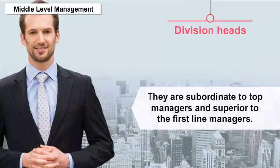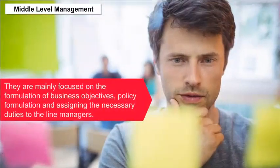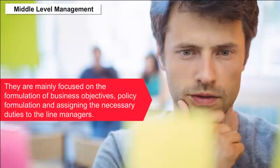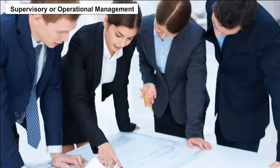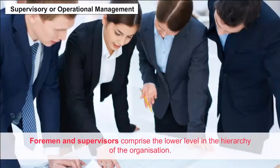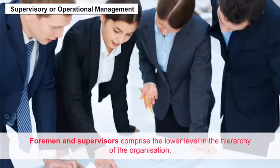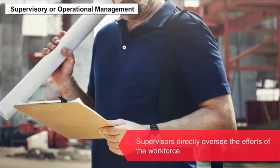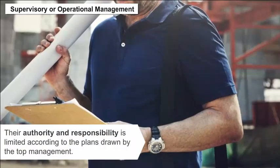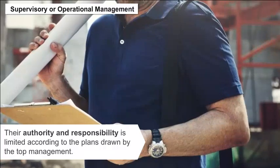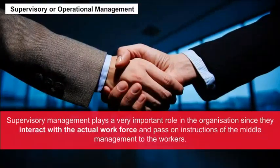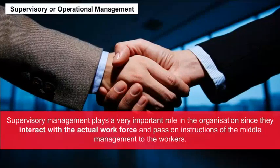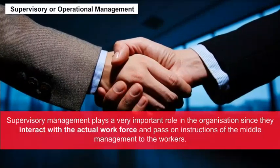Middle level managers are usually known as division heads. They are mainly focused on the formulation of business objectives, policy formulation and assigning necessary duties to line managers. Supervisory or Operational Management: Foremen and supervisors comprise the lower level in the hierarchy. Supervisors directly oversee the workforce, and their authority and responsibility is limited according to plans drawn by top management. They play a very important role by interacting with the actual workforce and passing on instructions from middle management.